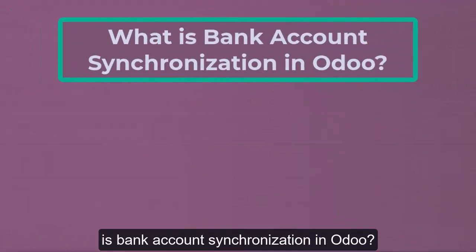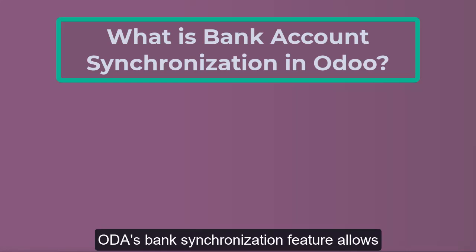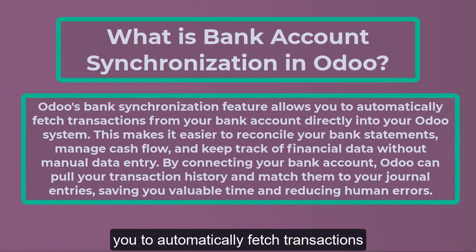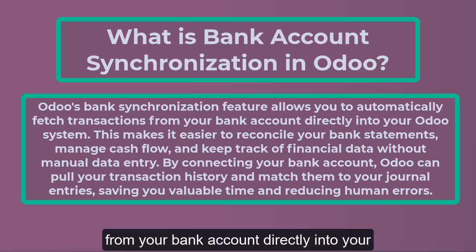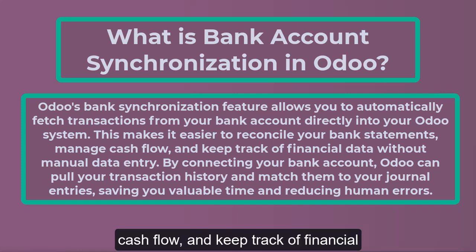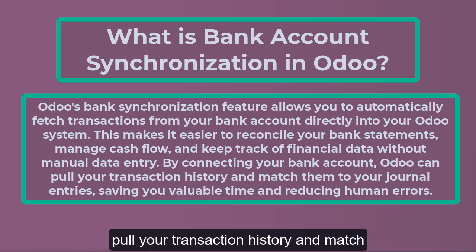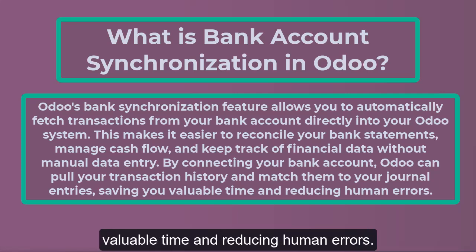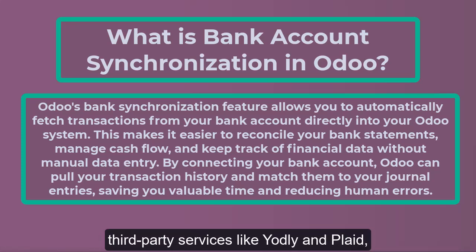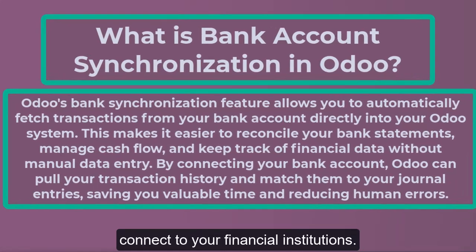What is bank account synchronization in Odoo? Odoo's bank synchronization feature allows you to automatically fetch transactions from your bank account directly into your Odoo system. This makes it easier to reconcile your bank statements, manage cash flow, and keep track of financial data without manual data entry. By connecting your bank account, Odoo can pull your transaction history and match them to your journal entries, saving you valuable time and reducing human errors. This process is made possible through third-party services like Yodlee and Plaid, which Odoo integrates with to securely connect to your financial institutions.